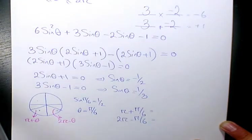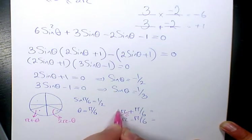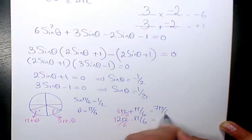When you add these, pi plus pi over 6, you need to have a common denominator, which is 6. So we have 7 pi over 6, and here I will have 11 pi over 6. These are the two answers for negative one half.